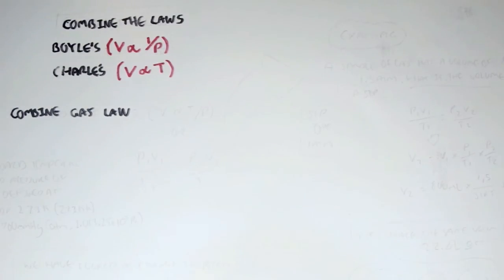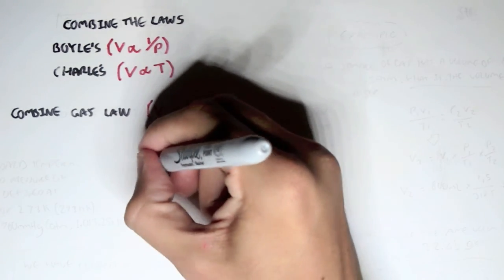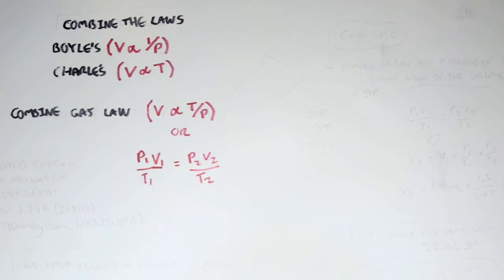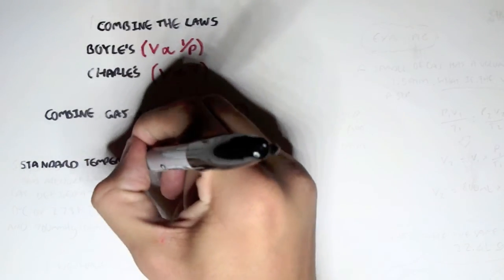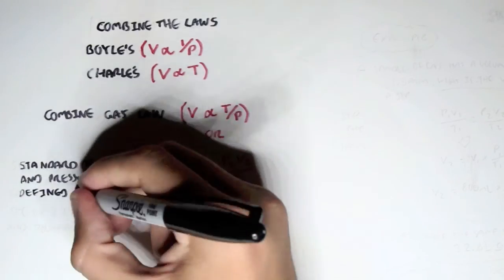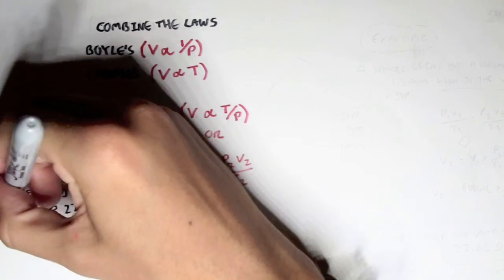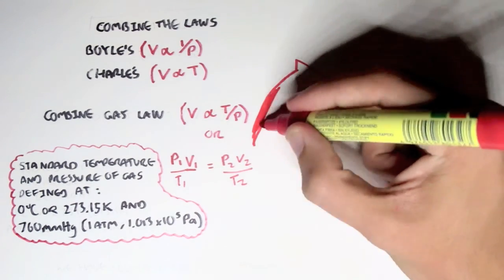Now, what would happen if we combined both Boyle's and Charles' law? Boyle's law says volume is proportional to one half of pressure, and Charles' law says volume is proportional to temperature. Combining these gives: volume is proportional to temperature over pressure, expressed as the equation P1V1 over T1 equals P2V2 over T2. An important key note is standard temperature and pressure, STP, defined as 0 degrees or 273.15 Kelvin, and a pressure of 760 millimeters mercury, or 1 atmospheric pressure, or 101,300 Pascals.